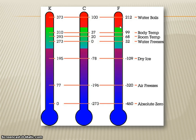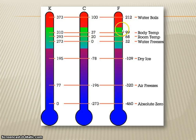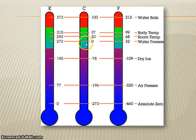On the Fahrenheit scale, water freezes at 32, all the way up to body temperature, which you're probably used to at 98.6 — here it's rounded up to 99. Take a look and see the differences between these three scales.